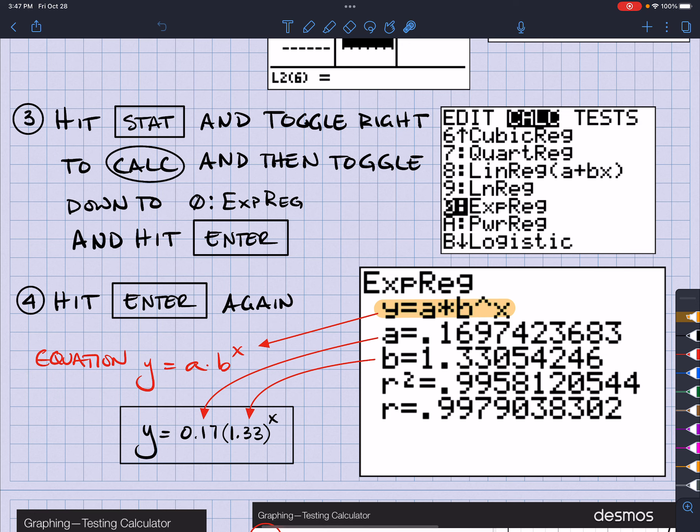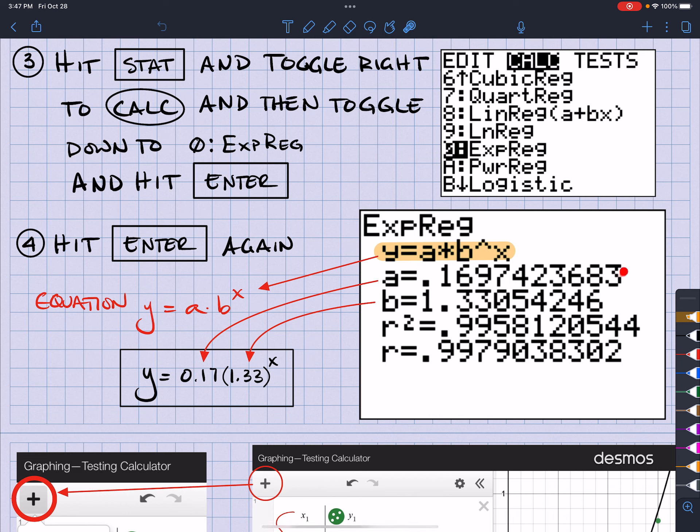And here is the formula: A times B raised to the X. And then, we're going to have our A value and the B value and also see how well that line fits. Alright. Now, in terms of Desmos,